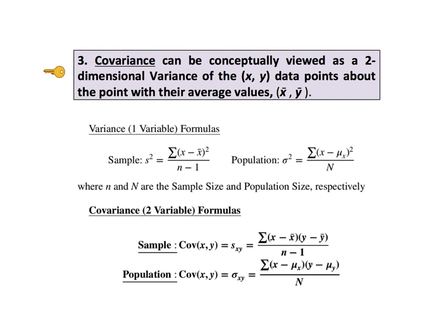Key to understanding number 3. Covariance can be conceptually understood as a two-dimensional variance of the x, y data points about the point with their means. That is about the point x bar, y bar.